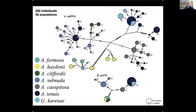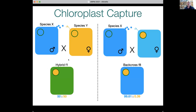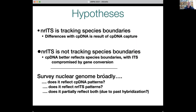A brief review of chloroplast capture genetics: if two species hybridize and produce a fertile hybrid that back-crosses in one direction, after eight generations of back-crossing the offspring morphologically resembles the pollen donor parent, and its nuclear genome is 99.61% identical to that parent — but it retains the chloroplast from the pistillate parent. That is chloroplast capture, and it's exactly what we expect when hybridization is followed by repeated back-crossing to one parent.